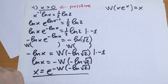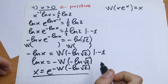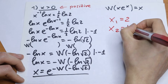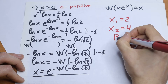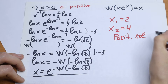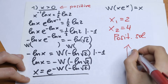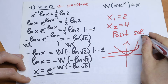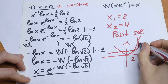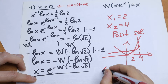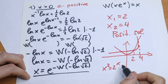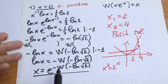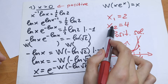You can calculate this using an internet math library, but I already did this for you. So x₁ equals 2 and x₂ equals 4 — these are our positive roots. You can verify: x squared equals 2 to the power x. These are our two positive roots.